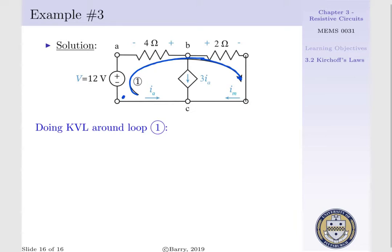Now we have to be consistent with our sign convention. Starting in the bottom left-hand corner, we will move in a clockwise fashion, such that we enter the negative terminal of our voltage source, minus 12 volts. Then we are entering the negative terminal of our resistor, where the voltage drop across the resistor is IA times 4 ohms.